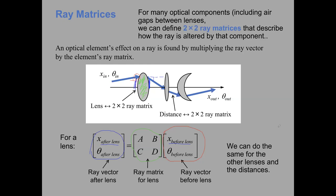Our goal is to get this matrix for a lens, but we have some work to get there first — and that work also makes for some good example problems. We're going to work through a few of these problems to define the ray matrix for some simpler objects first, and then use those results to build the result for a lens.